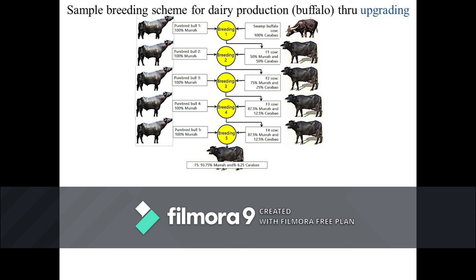In producing Philippine dairy buffaloes, an upgrading scheme involving a series of backcrosses between Murrah buffalo bulls and Philippine carabao cows is now a popular breeding scheme. Continuous backcrossing is done, and after the production of F4 progenies that possess 93.75% riverine blood, that bloodline may be considered for inclusion in the purebred dairy buffalo herd registry. Milk production on average is increased with higher riverine blood. Crossbreed bulls produced from the scheme should not be used for breeding — they should be castrated instead and used for draft or meat production. This scheme is made possible through the extensive use of artificial insemination.